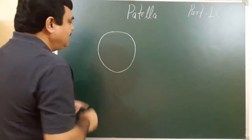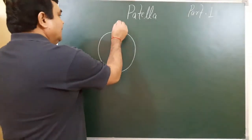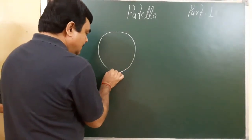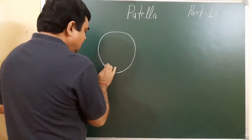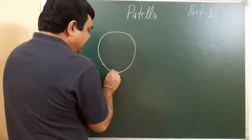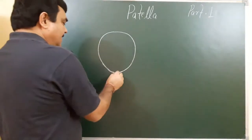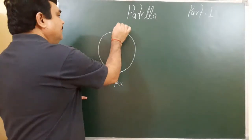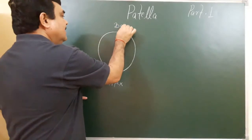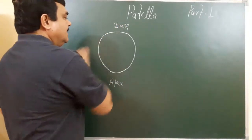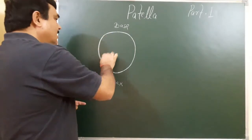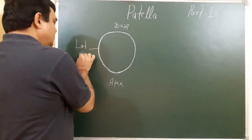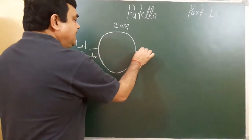This is the anterior view of the patella. The patella is triangular in shape. Here is the apex, this is the base, and this is the lateral border and the medial border.